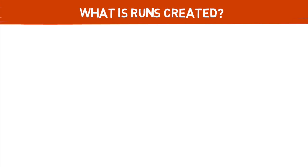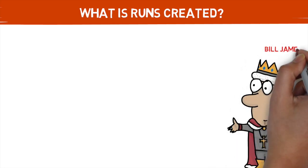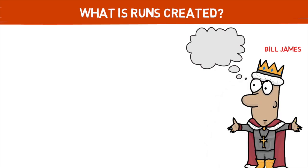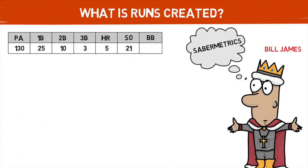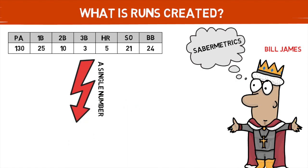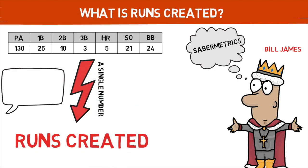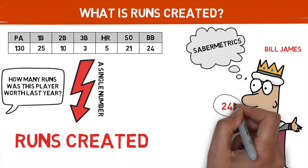So to begin with, what is runs created? It was a statistic created by none other than Bill James himself, someone I probably could have brought up sooner considering he created the term Sabermetrics. The goal of this statistic was similar to that of the other statistics covered on this channel: to take your typical production slash line and turn it into one easy-to-read, all-encompassing statistic. There's no better way to read about a player's production than to quantify the number of runs they created based on their production.